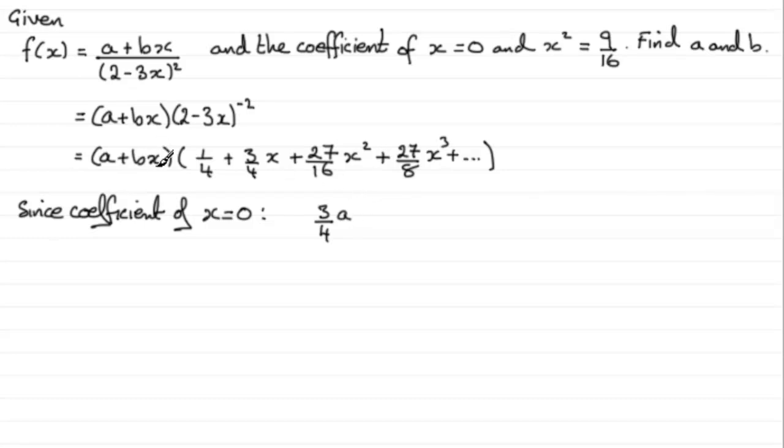Then we multiply through by bx, and the term in x would be bx times 1/4, so the coefficient would be 1/4b. We have 3/4a + 1/4b = 0 because the coefficient of x is 0.